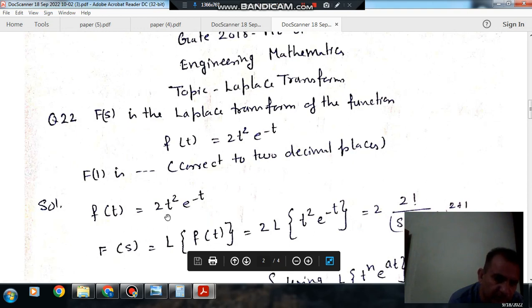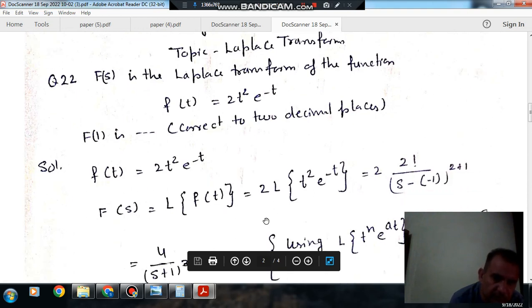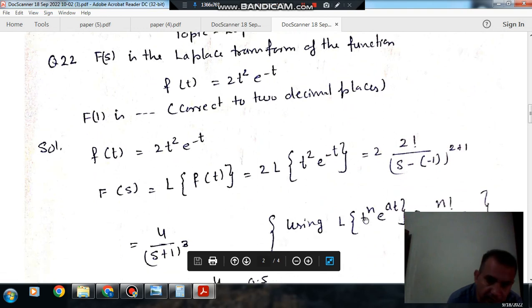F(s) is the Laplace transform of this f(t). This Laplace transform can be found out by using the formula, the general formula for Laplace transform of t^n times e^(at) is n factorial divided by (s - a) to the power (n + 1).